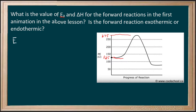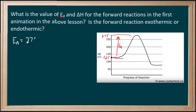Our energy of activation is going to look at the top that we get to. So, as an example here, this is our energy of activation. To find that value, we know we end up at 275 and we start off at 125. So the difference is 150 kilojoules.